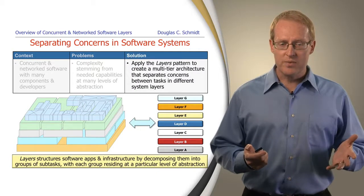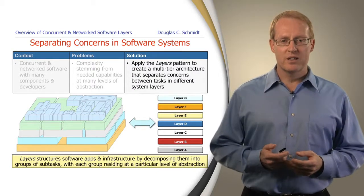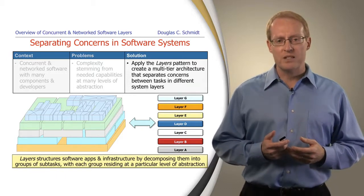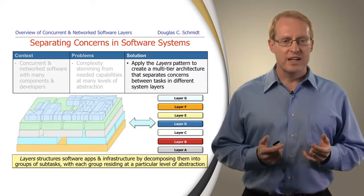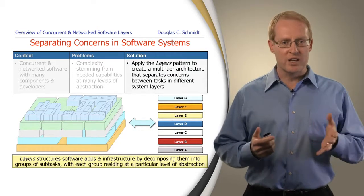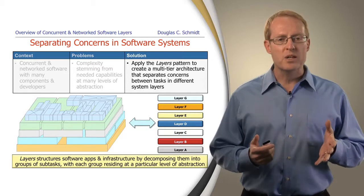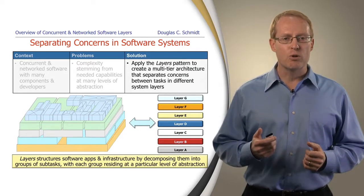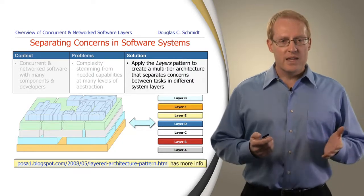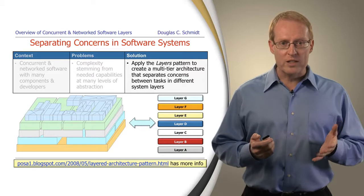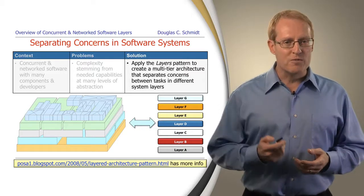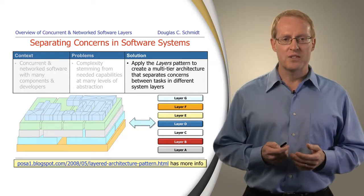What's the solution? Apply the layers pattern to create a multi-tier or multi-layer architecture that separates concerns between tasks in different system layers. The layers pattern structures software applications and infrastructure by decomposing them into groups of sub-tasks where each group resides at a particular level of abstraction. This pattern is described in the Pattern Oriented Software Architecture Volume 1 book, so-called POSA 1, and you can also find an overview of the pattern at the URL on this slide.